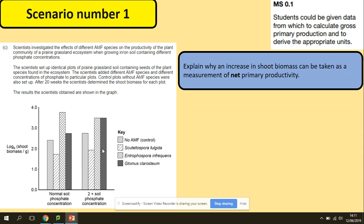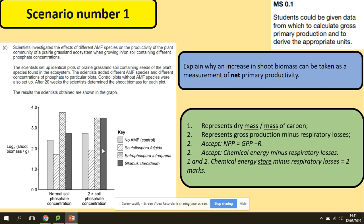Another skill here, we've got to explain why an increase in shoot biomass can be taken as a measurement of net primary productivity. So again, we're thinking what is the net primary productivity, which is gross minus the respiration. But explain why, so using your biological knowledge, we need to expand on this. You always will get a mark for the equation, but what else we need to include here is the fact that it represents dry mass. So net primary productivity in this situation will be our dry mass, which is gross minus the respiration.